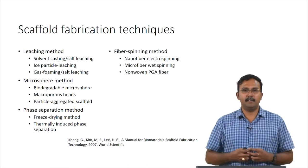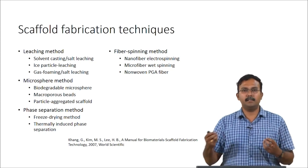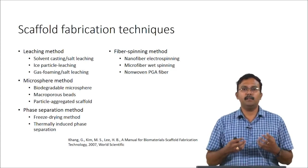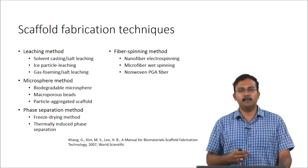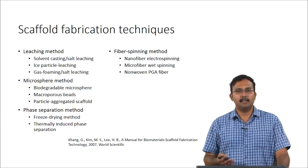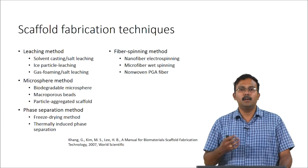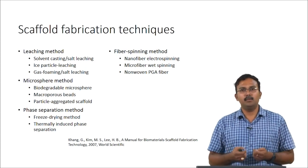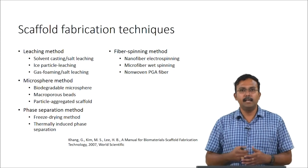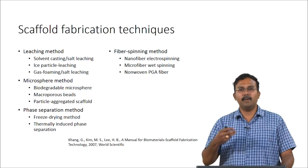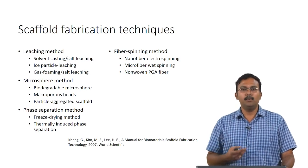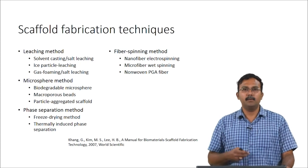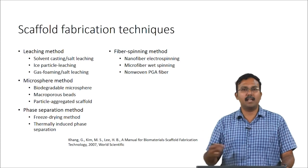You also have fiber spinning strategies, where different textile-based fabrication methods are employed in tissue engineering. Nanofiber electrospinning, microfiber wet spinning, and nano non-woven polymer fibers are all commonly used methods for preparing fibrous scaffolds. In many extracellular matrices you have a fibrous structure, so creating a fiber structure using these spinning techniques can actually mimic ECM very effectively. In electrospinning, where you create nanofibers, you would also have a significantly large surface area to volume ratio which can help in cell adhesion and proliferation.